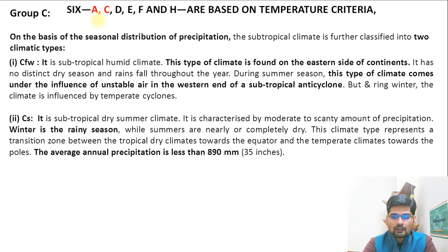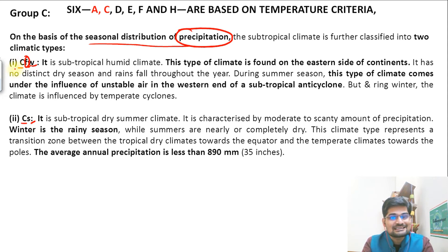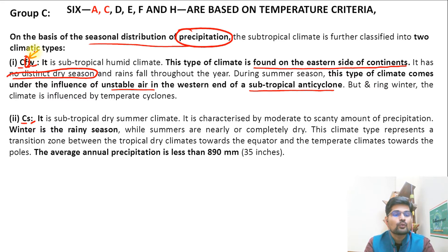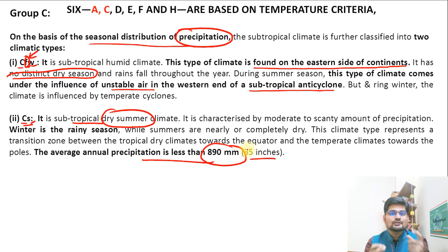Group C is based on the seasonal distribution of precipitation. It has two subtypes: Cf and Cs. Cf is where you have a fully wet season — always wet with no dry season. This climate is found on the eastern side of continents, under the influence of unstable air and subtropical anti-cyclones, with no distinct dry season. Cs is the subtropical dry summer type, with precipitation of about 890 millimeters, that is about 35 inches.